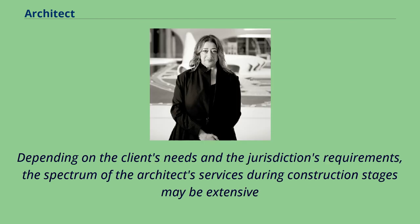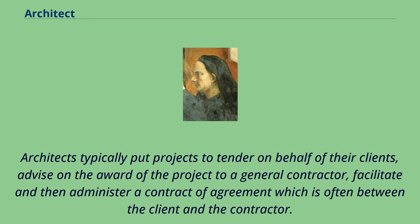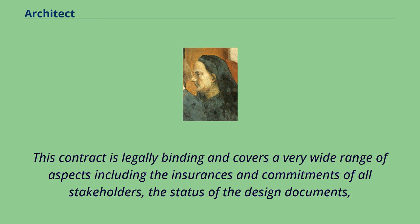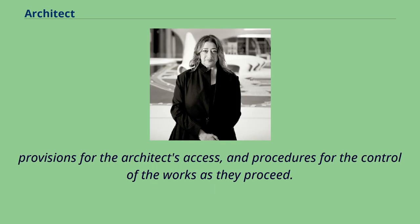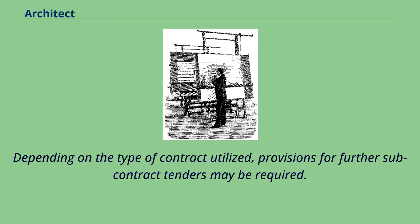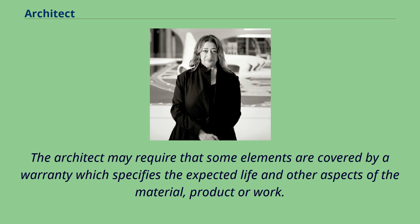Depending on the client's needs and the jurisdiction's requirements, the spectrum of the architect's services during construction stages may be extensive or less involved. Architects typically put projects to tender on behalf of their clients, advise on the award of the project to a general contractor, and facilitate and administer a contract of agreement which is often between the client and the contractor. This contract is legally binding and covers a very wide range of aspects including the insurances and commitments of all stakeholders, the status of the design documents, provisions for the architect's access, and procedures for the control of the works as they proceed. Depending on the type of contract utilized, provisions for further subcontract tenders may be required. The architect may require that some elements are covered by a warranty which specifies the expected life and other aspects of the material, product or work.